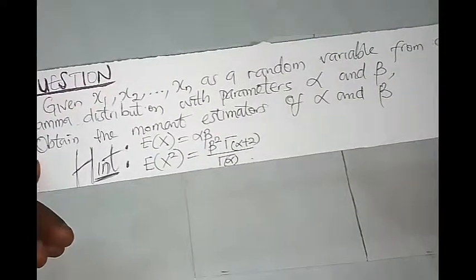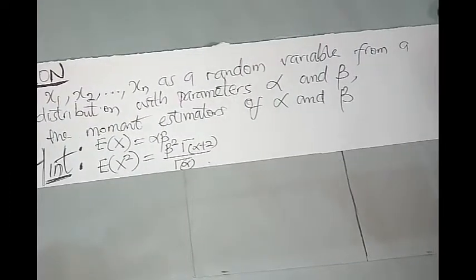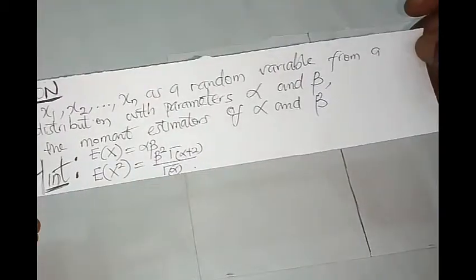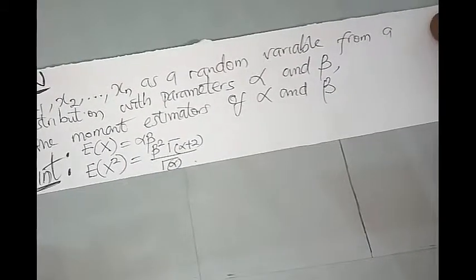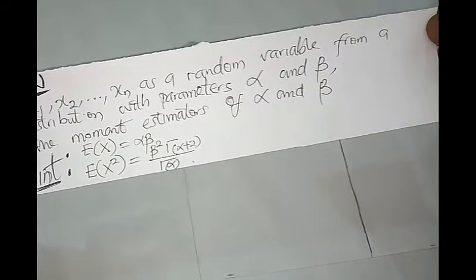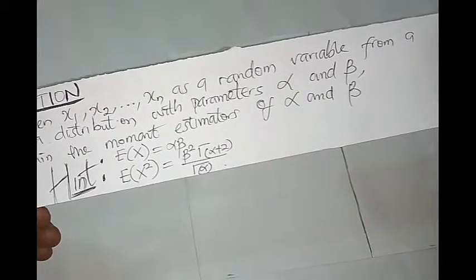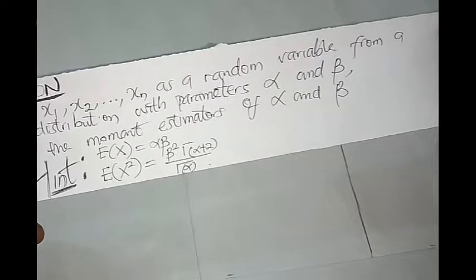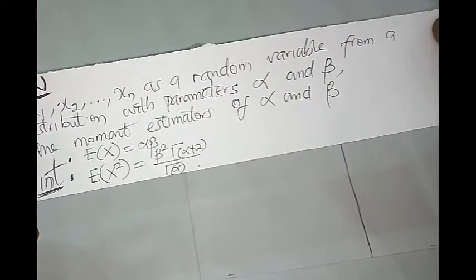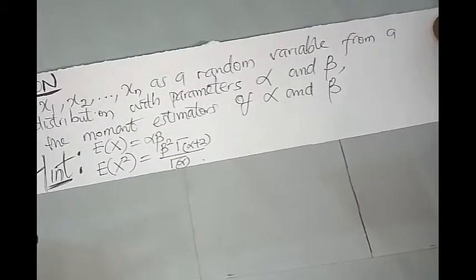Hello, today I'm going to teach you about how to obtain a moment estimator of some random variables. The question is about random variables x1 to xn with a gamma distribution. We need to find the moment estimator of this gamma distribution. We've been given a hint that the expected value of x is alpha beta, and the expected value of x squared is equal to beta squared times the gamma function of alpha plus 2 over the gamma function of alpha.